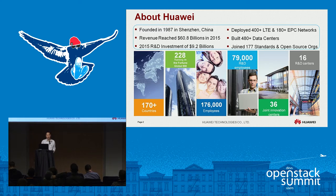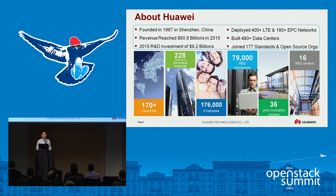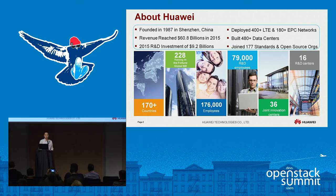Huawei has about more than 176,000 employees, so we have a lot of internal development going on. We are changing our internal platform into more agile and microservice-based. Our external customers have the same requirements — they want to move their practices into more agile, which is why we need to move to the container world to work with this fast-changing environment.